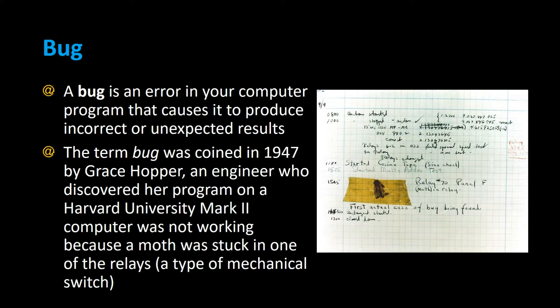The term bug was coined back in 1947 by Grace Hopper, an engineer who discovered her program on a Harvard University Mark II computer was not working because there was a moth stuck inside one of the relays, which is a type of mechanical switch. They actually took the moth that she found in that computer and taped it into a notebook. And that is why we call issues in our program bugs — it's because of that little sucker right there. And I believe it's still preserved today.